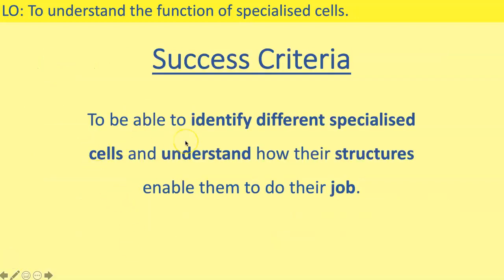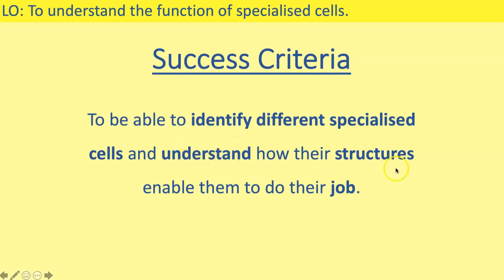Going back to the success criteria for today's session: you should be able to identify different specialised cells — that's what the card sort has enabled you to do. You should also understand how their structures enable them to do their job. Your card sort tells you the structure and the job of each type of cell, so you can match them together and explain both the structure and the job of each cell type.